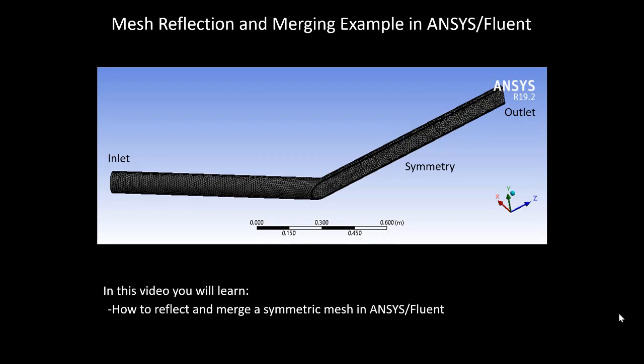Welcome to this presentation entitled Mesh Reflection and Merging Example in ANSYS Fluent. In this video you will learn how to reflect and merge a symmetric mesh in ANSYS Fluent. You may want to do this if you have a half symmetry mesh or case file but no solid model, or just as a shortcut so you don't have to open Design Modeler or SpaceClaim to obtain a full model.